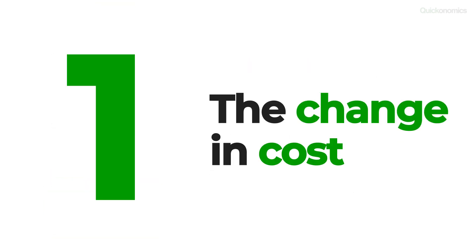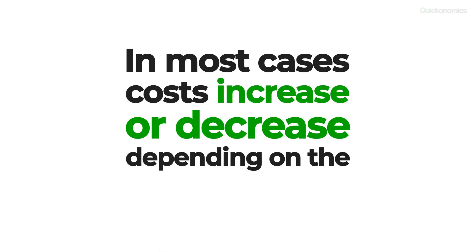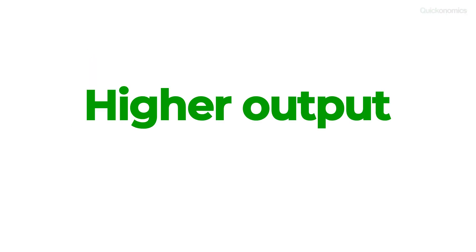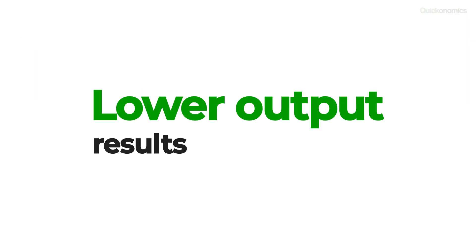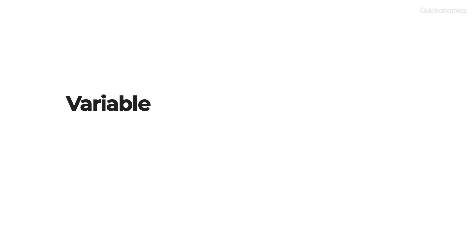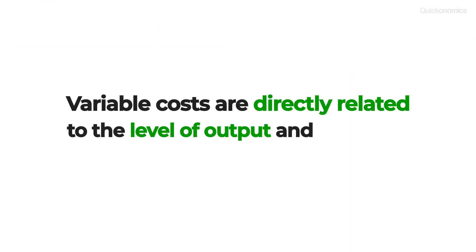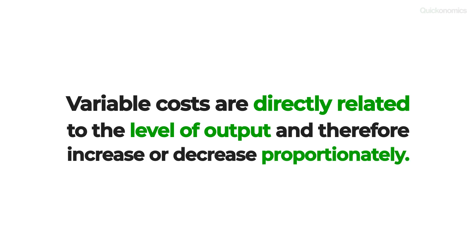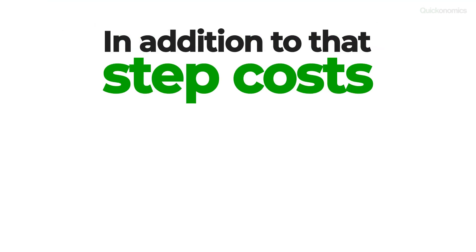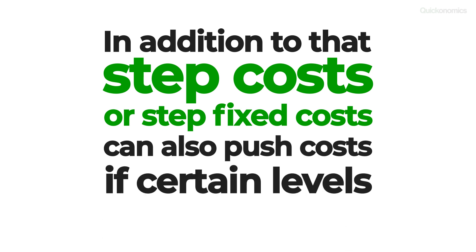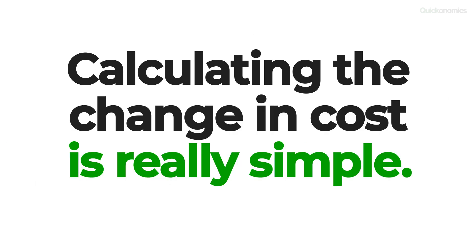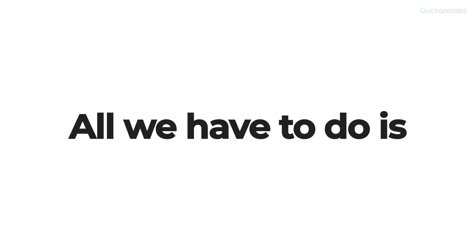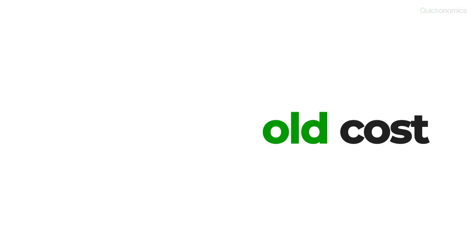Let's start with step one: the change in cost. In most cases, costs increase or decrease depending on the level of output. A higher output usually results in higher costs, while a lower output results in lower costs. The reason for this is the existence of variable costs, which are directly related to the level of output and therefore increase or decrease proportionately. In addition, step costs or step fixed costs can also push costs if certain levels of output are reached. Calculating the change in cost is really simple — all we have to do is take the old cost and subtract it from the new cost.